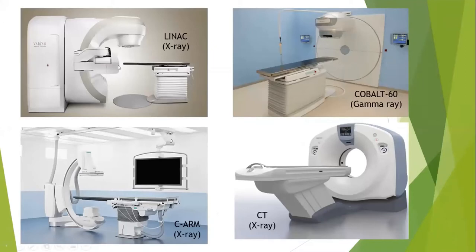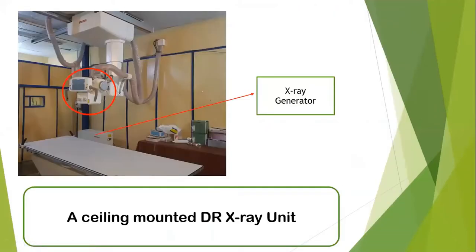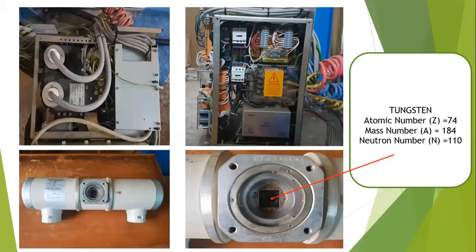Here I show a few devices: on this side is a linac that primarily uses high-energy x-ray; here is a cobalt unit primarily using gamma ray; here is a C-arm x-ray unit; and here is a CT — also an x-ray. This image from another lecture shows how an x-ray generator looks. This area is where the x-ray comes out, and these are ceiling-mounted DR x-ray units — quite sophisticated.